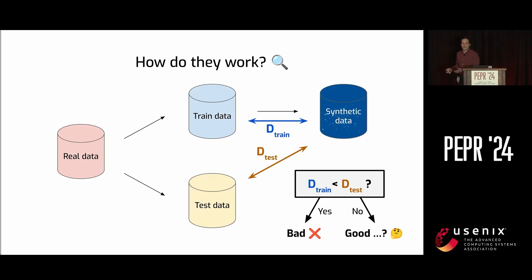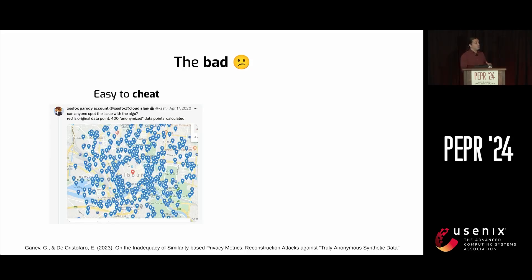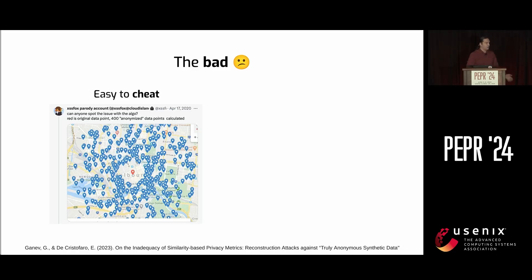That does sound reasonable, right? But I did say something about bad and ugly before, so you can probably see where this is going. What's bad about those metrics? First, a main problem is that it's really easy to cheat at these metrics. All we need to do is make sure that the synthetic data isn't too close to the training data — except if we do this, we do leak information. Exactly what's happening in this screenshot of a COVID-19 tracking app: knowing where the real data is not gives us information about where the real data points actually are.